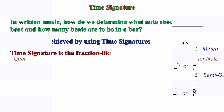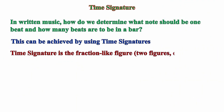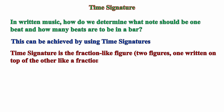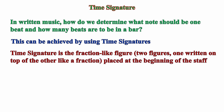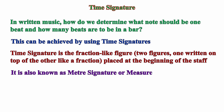By definition, a time signature is a fraction-like figure — two figures, one written on top of the other like a fraction — placed at the beginning of the staff. It is also known as meter signature or measure signature.